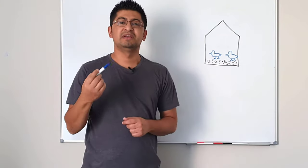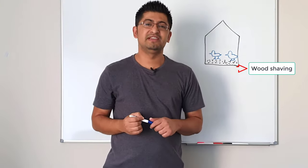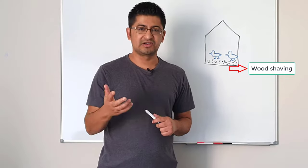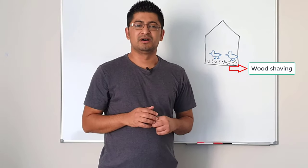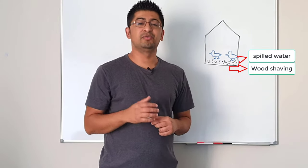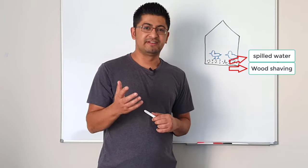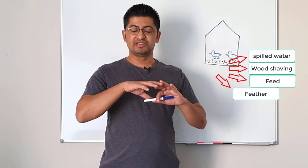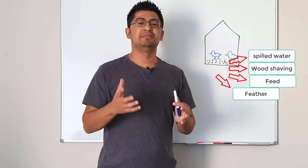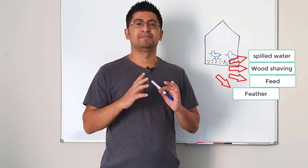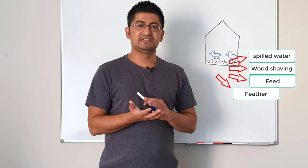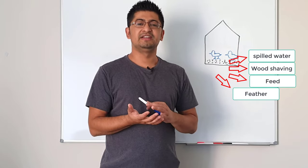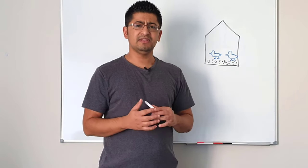Poultry litter is a mix of wood shavings, rice hulls, or straw. There could be some spilled water, a little bit of feed, and feathers. So poultry litter is a combination of wood shavings, feathers, feed, water, and several other things.